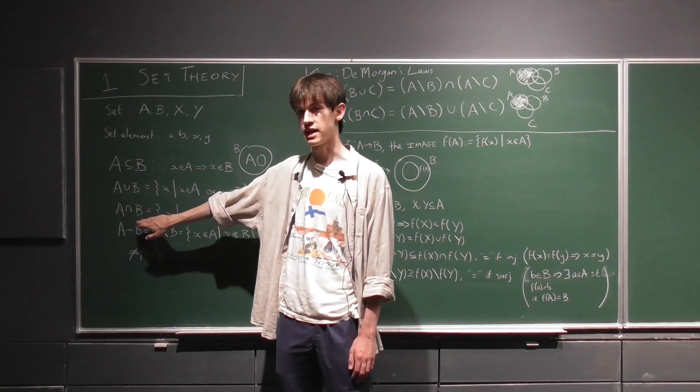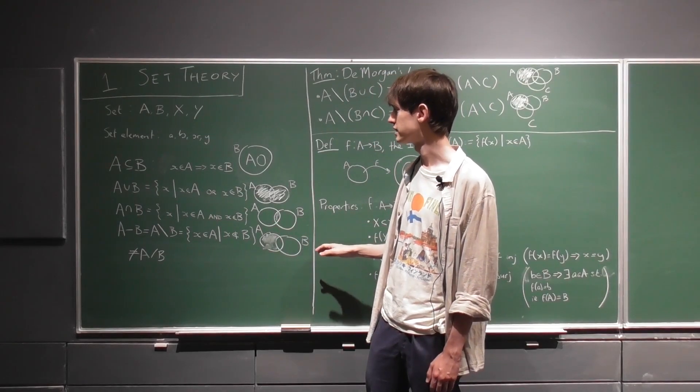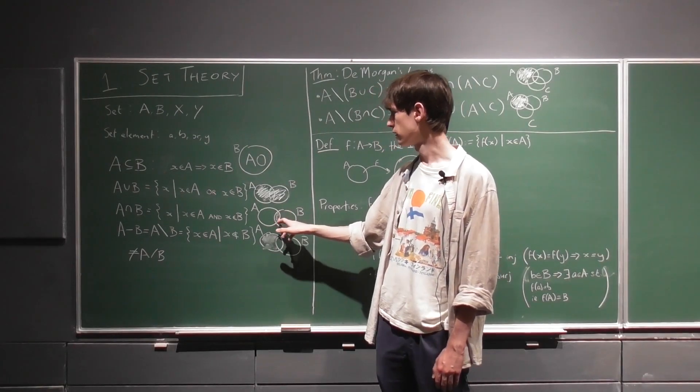Here is a set intersection, and it comprises the elements that are in A and B, so it would be this sliver in the middle here.